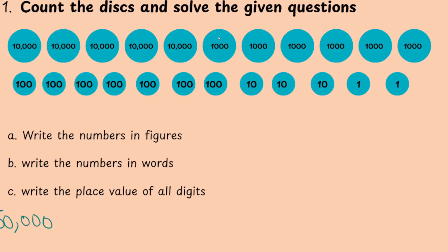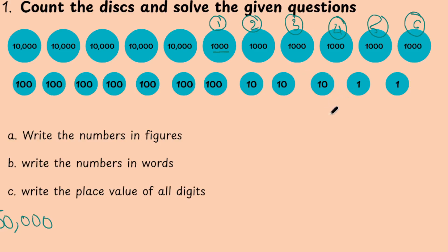Next, here we have 3 zeros which means it is a thousand. So we have 1 desk of 1,000. 2nd, 3rd, 4th, 5th, 6th. There are 6 desks of thousands. So what we are going to write is 6 thousands.